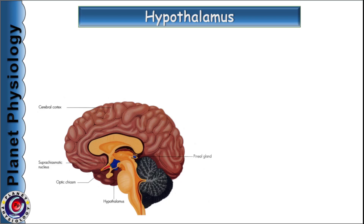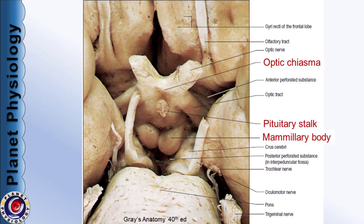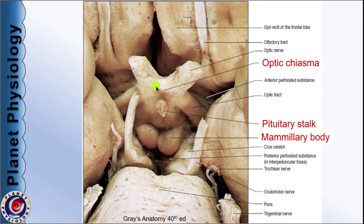Let us understand the anatomical location of the hypothalamus. Hypothalamus is a diencephalic structure situated just below the thalamus. It forms the inferior part of the lateral walls as well as the floor of the third ventricle. Hypothalamus is basically a cluster of several nuclear masses extending from the optic chiasma anteriorly to the mammillary bodies posteriorly.